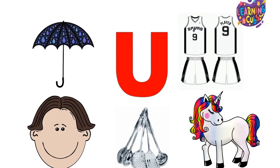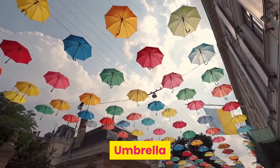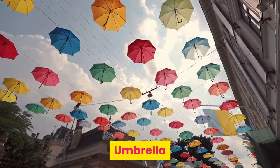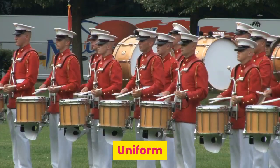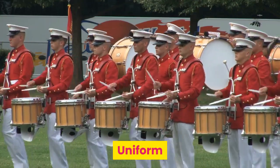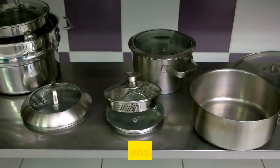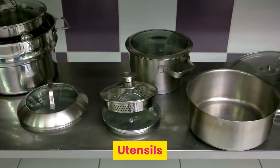Letter U. U is for Umbrella. Unicorn. Uniform. Utensils. Uncle.